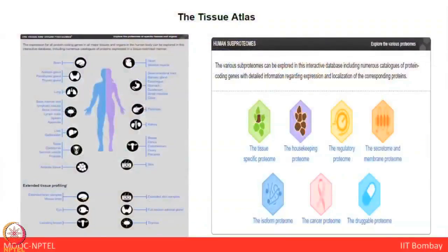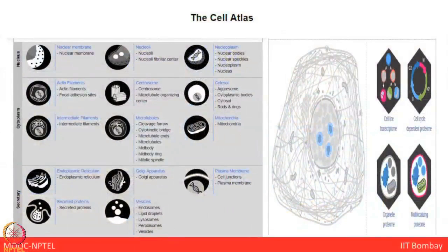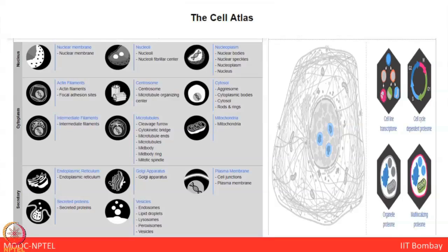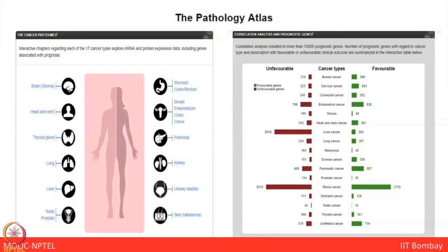The Human Protein Atlas has been broadly classified into three major atlases. The first is the Tissue Atlas, which contains information regarding the expression profile of human genes both at mRNA and protein levels — protein expression data from 44 normal human tissue types derived from antibody-based protein profiling using immunohistochemistry. The second is the Cell Atlas, which provides high-resolution insights into the spatiotemporal distribution of proteins within human cells, derived from antibody-based profiling by immunofluorescence confocal microscopy using a panel of 64 cell lines.